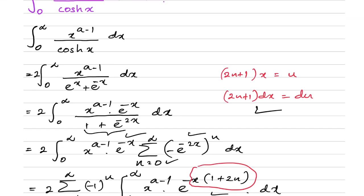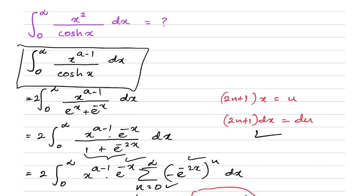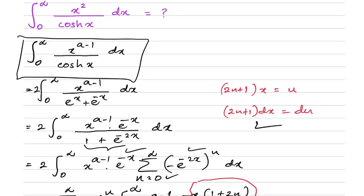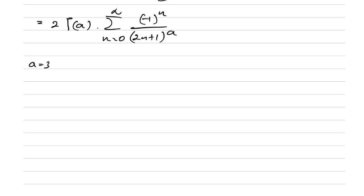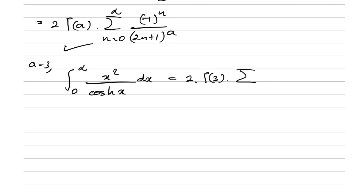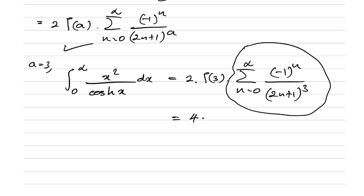Now, plugging in a=3 gives us the original integral of x² over cosh(x). We get 2 times Gamma(3) times the sum from n=0 to infinity of (-1)^n over (2n+1)^3. Since Gamma(3) = 2! = 2, we have 4 times this sum, which is the Dirichlet beta function beta(3).